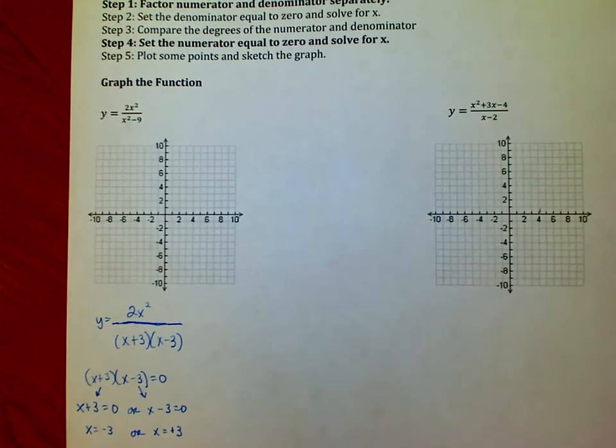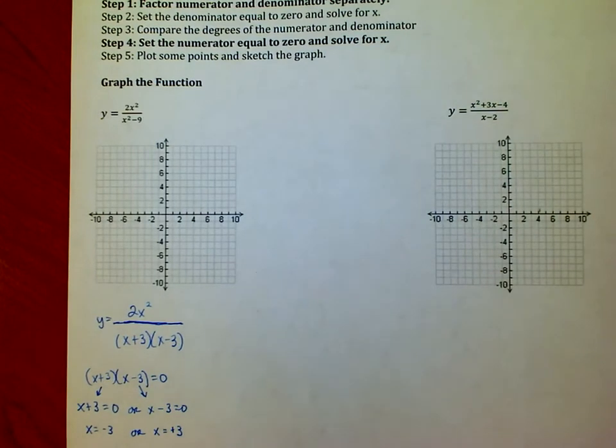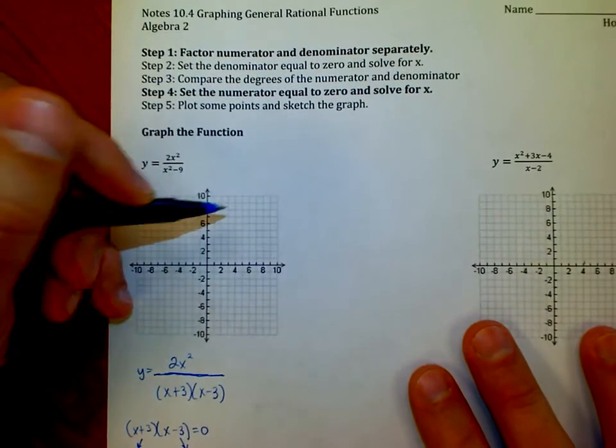What that does is that tells me the location of my vertical asymptotes. So here I actually have two of them. I'm going to draw a dotted line right here at positive 3